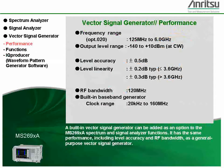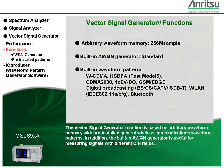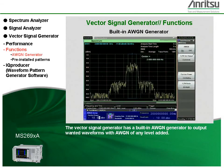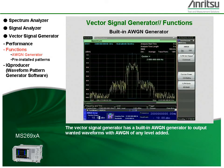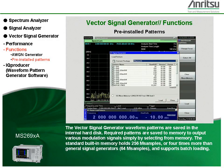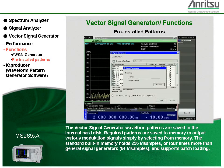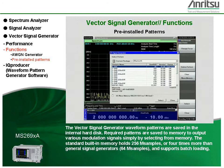A built-in vector signal generator can be added as an option to the MS269XA spectrum and signal analyzer functions. It has the same performance, including level accuracy and RF bandwidth, as a general-purpose vector signal generator. The vector signal generator function is based on arbitrary waveform memory with pre-installed general wireless communications waveform patterns. The built-in AWGN generator is useful for measuring signals with different carrier-to-noise ratios, allowing wanted waveforms to be output with AWGN of any level added. Waveform patterns are saved in the internal hard disk, and required patterns are saved to memory to output various modulation signals simply by selecting from memory.